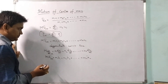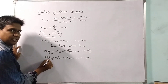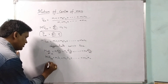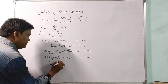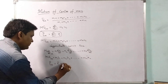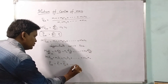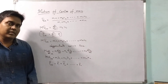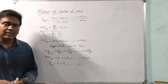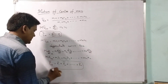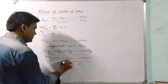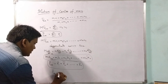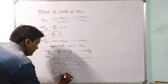Now, mass times acceleration is force according to Newton's second law. So the force on the center of mass equals F1 + F2 + ... + Fn, which is the sum of all forces acting on the particles. This can be simplified as: F_cm = sigma(i=1 to n) Fi. This is the formula for the total force acting on the center of mass.